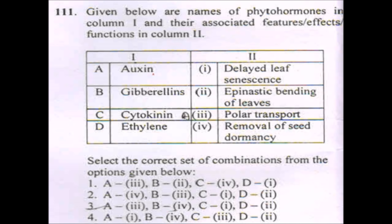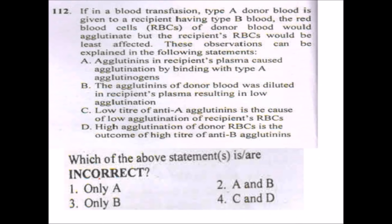Next question: match the plant hormone features. Auxin is involved in polar transport. Gibberellin is responsible for internode elongation and breaking seed dormancy. Cytokinin — as its name suggests — is involved in cell division and delays leaf senescence. Ethylene is involved in epinastic bending of the leaf. The answer is option 3.